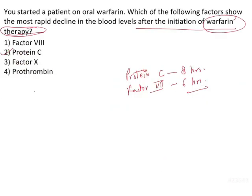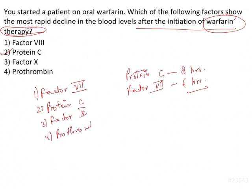If this question had options — Factor 7, Protein C, Factor 10, and Prothrombin — the correct answer would be Factor 7, because it has a half-life of 6 hours compared to Protein C's 8 hours, so Factor 7 declines most rapidly. However, since Factor 7 is not among the given options, the correct answer remains Protein C — option 2.